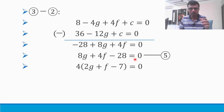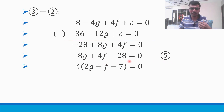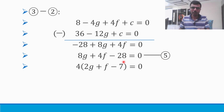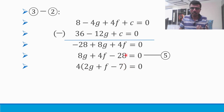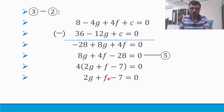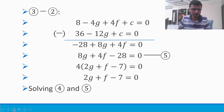Taking 4 common: 2g + f - 7 = 0. This is my equation 5. I apologize for initially labelling it incorrectly — please mark this one as equation 5.